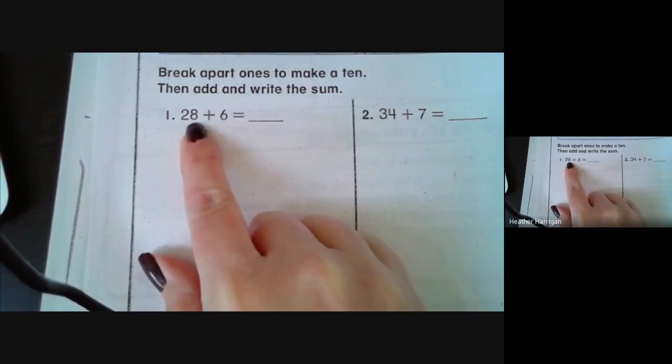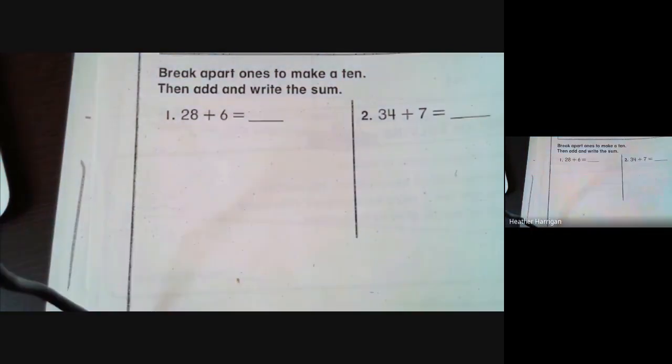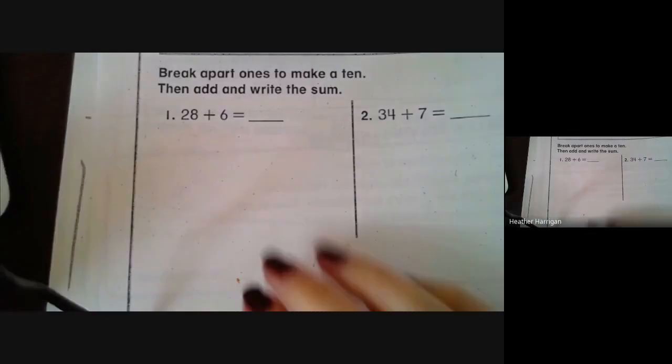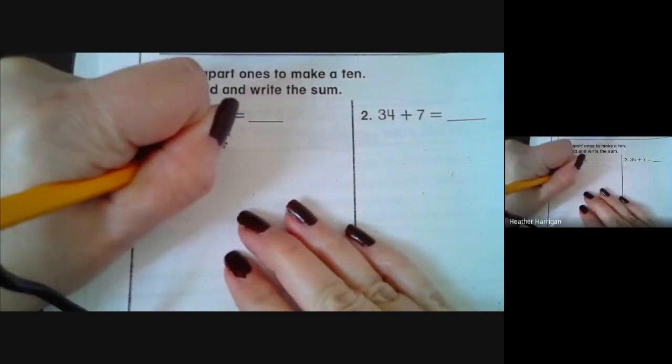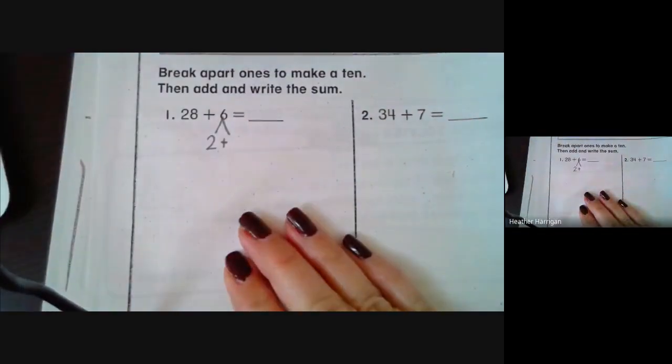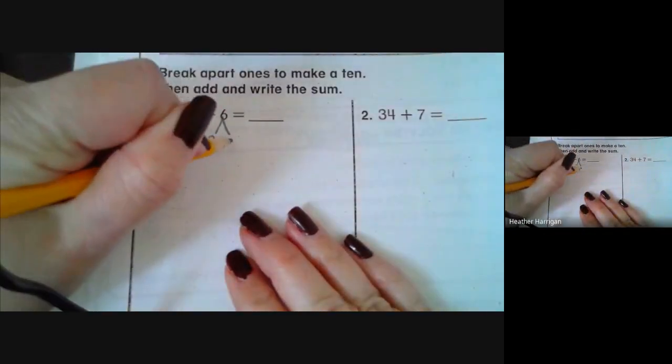A lot of times with kids who are struggling, I ask them to tap it in their head, 28, and count up to 30. They would say 28, 29, 30. So they know they're going to break the 6 up into 2 plus something, and then they would come up with 2 plus 4.